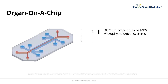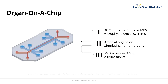Simply put, an organ chip is an artificial organ that simulates human organs. It is a multi-channel 3D microfluidic cell culture device that stimulates organ activities, mechanisms, and physiological responses.